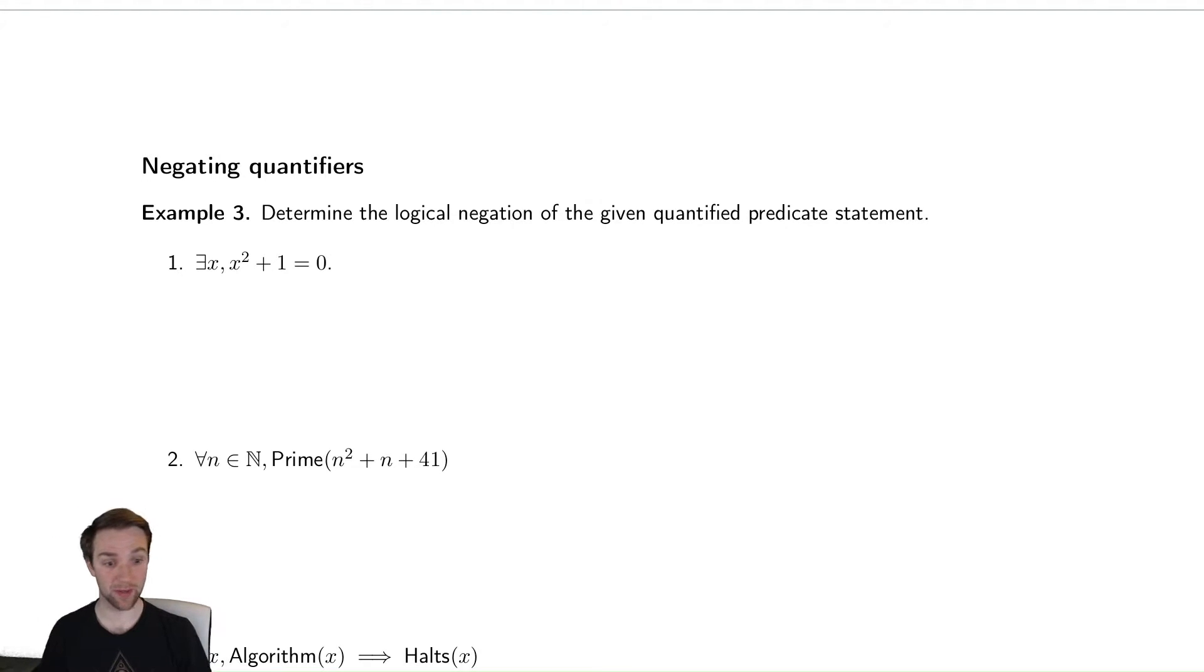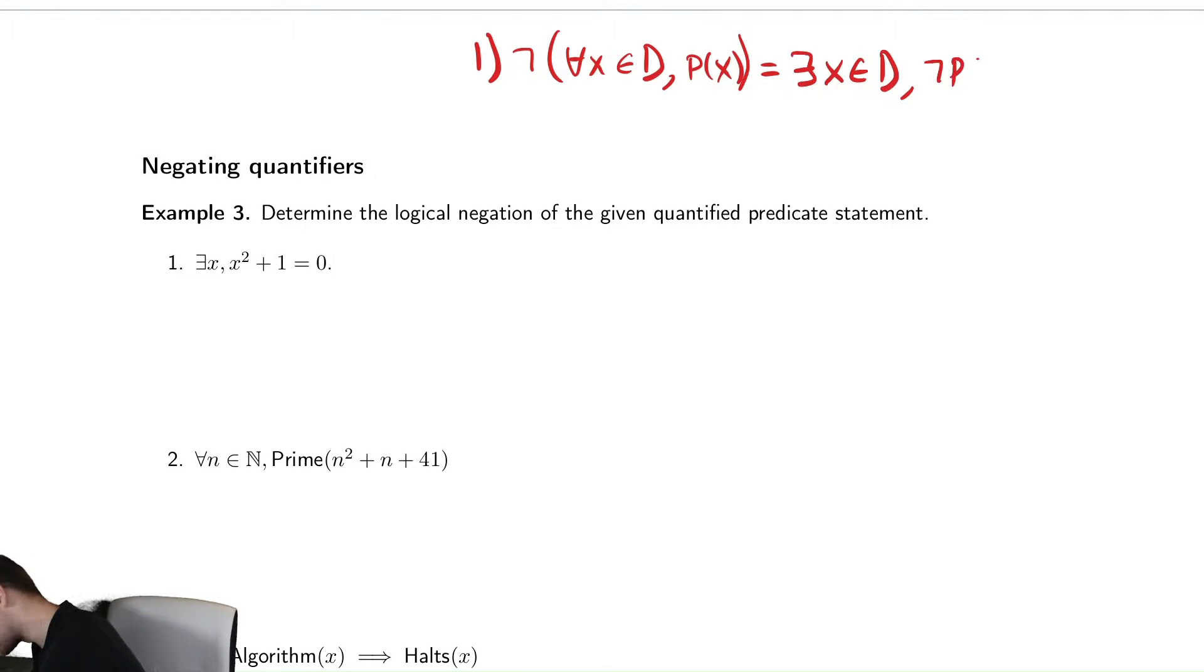So we're going to write down two rules for describing how do you negate a quantified statement. Our first rule is if you have a not of for all x in some set, p of x, that is the same as there exists an x in that same set such that not whatever we said. If you're trying to say everything in this set satisfies some predicate, the opposite of that is that there's something in that set that doesn't satisfy it, which hopefully intuitively makes sense.